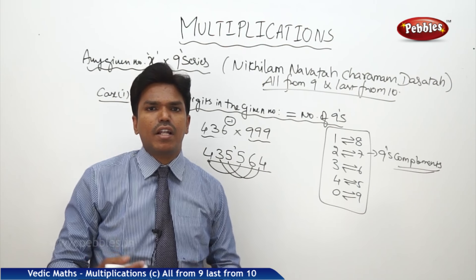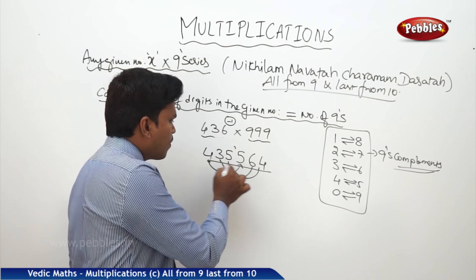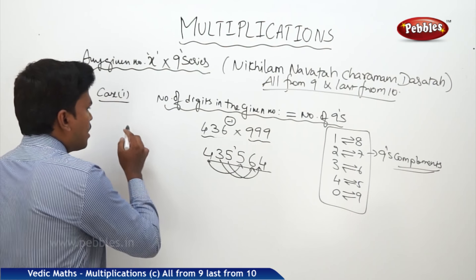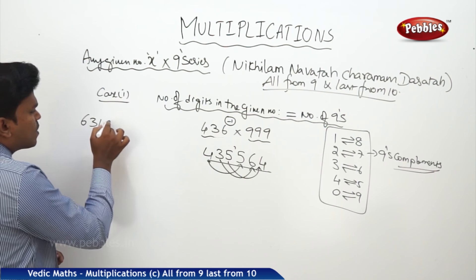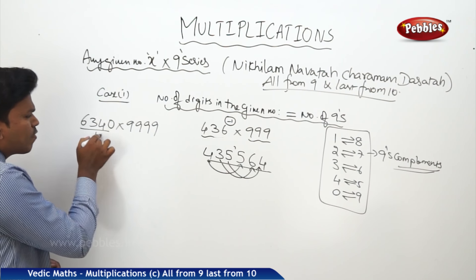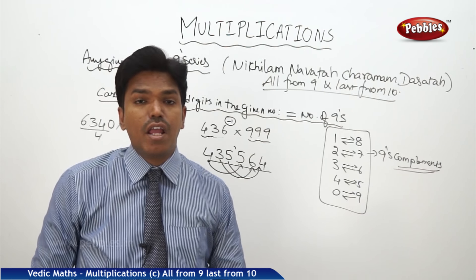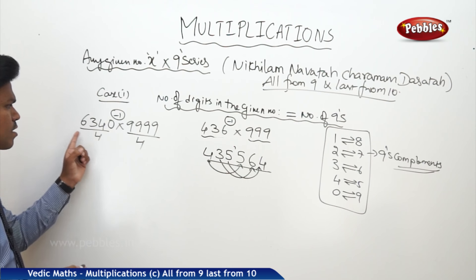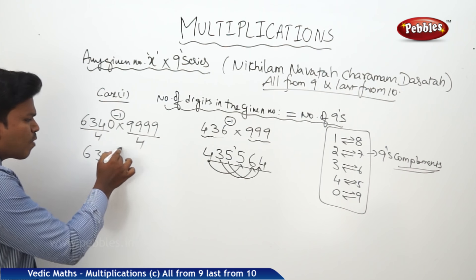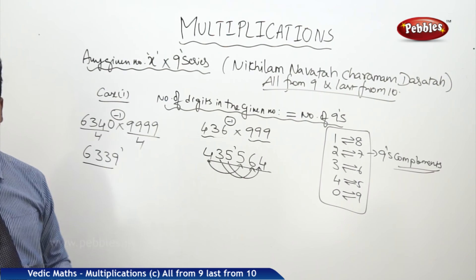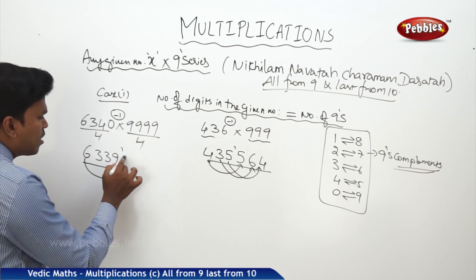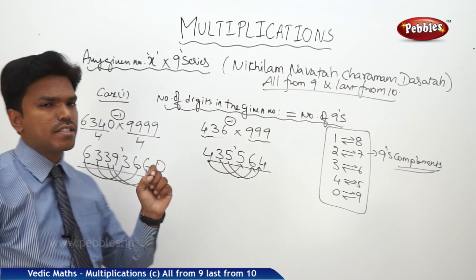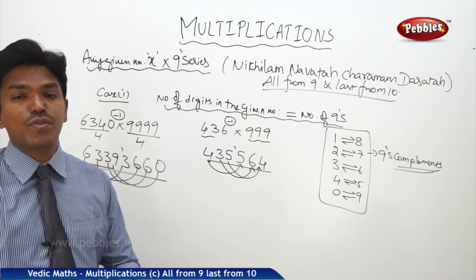Another example: 6340 into 9999. How many digits? 4. How many nines? 4. Equal, so same method: subtract 1 from 6340 to get 6339. Now write the sequential 9's complements: for 6 it's 3, for 3 it's 6, for 3 it's 6, for 9 it's 0. So the answer is 6339|3660.